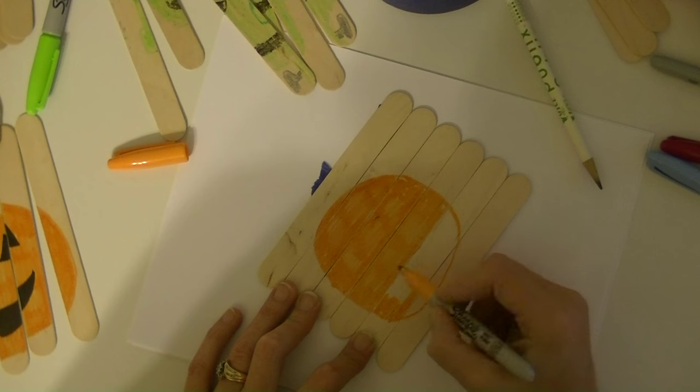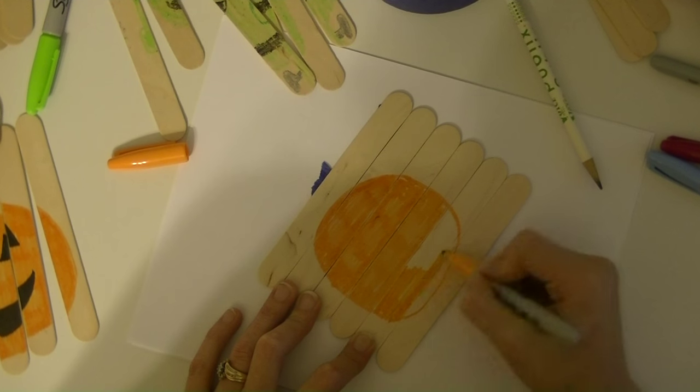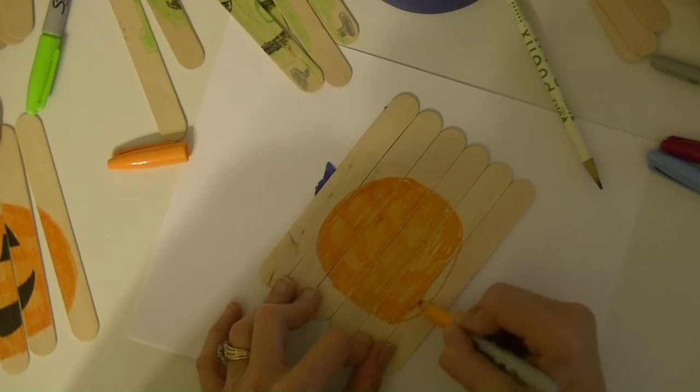For the ghost, since it's white, I probably paint the popsicle sticks black first. And then just paint on the white ghost. I mean, you could do the letters, you could do alphabets, you know, if they want to learn their letters or numbers, all kinds of ways you can do these.